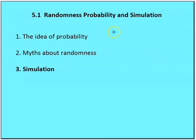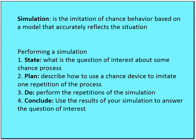The last topic is simulation. Simulation is the imitation of chance behavior based on a model that accurately reflects a situation. We're going to simulate some event — such as coin flips by tossing coins — but there are other ways to simulate events. When performing simulation, we want to include the state-plan-do-conclude process: State what is a question of interest about some chance process. Plan how to use a chance device to imitate one repetition of the process. Do perform the repetitions, then use the results to answer the question of interest.